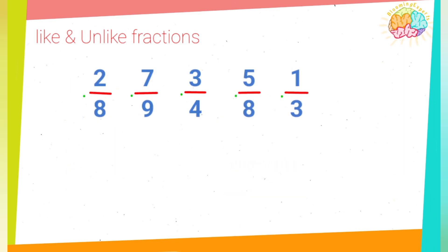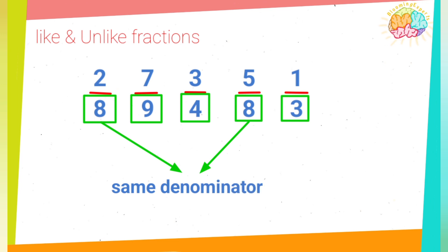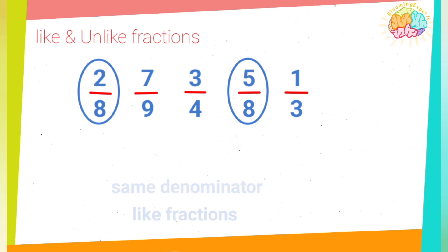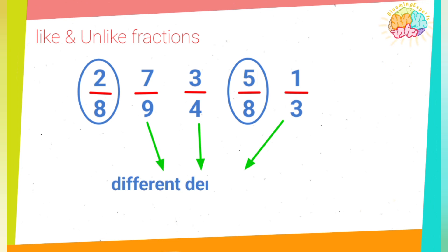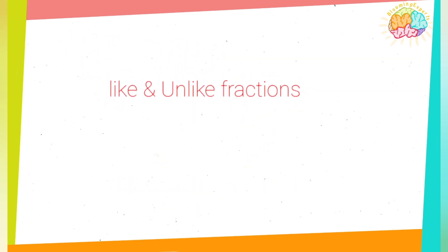Here are some examples of fractions. If you look at the denominators, the first one and the fourth have the same denominator. Those fractions with the same denominator are called like fractions. The others with different denominators are called unlike fractions — they have no denominator in common.